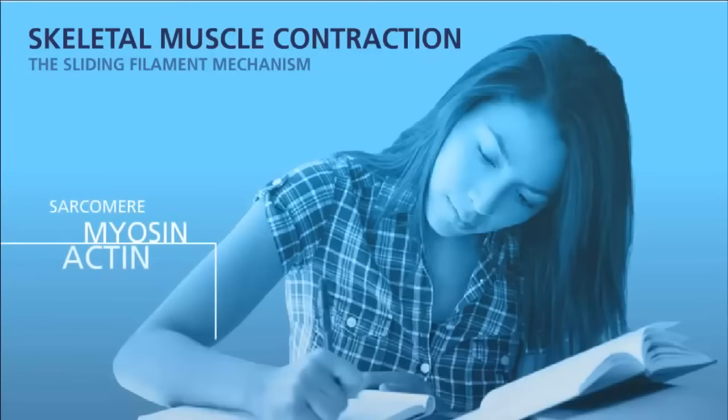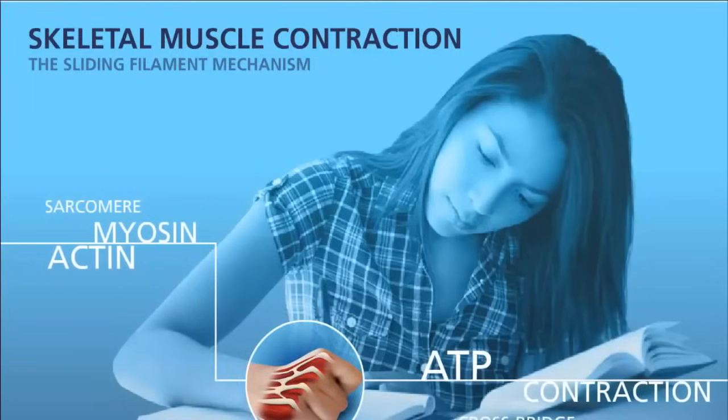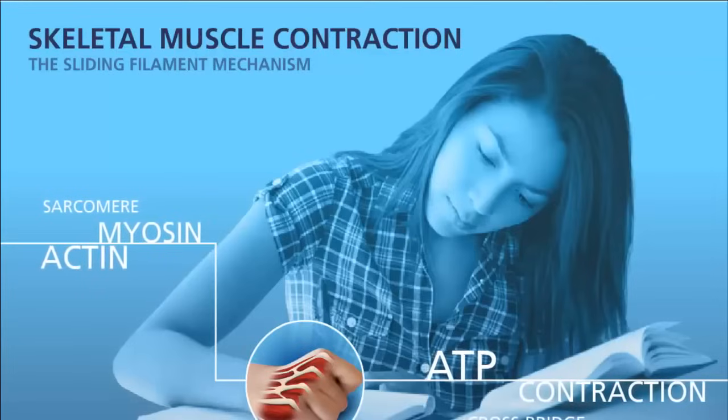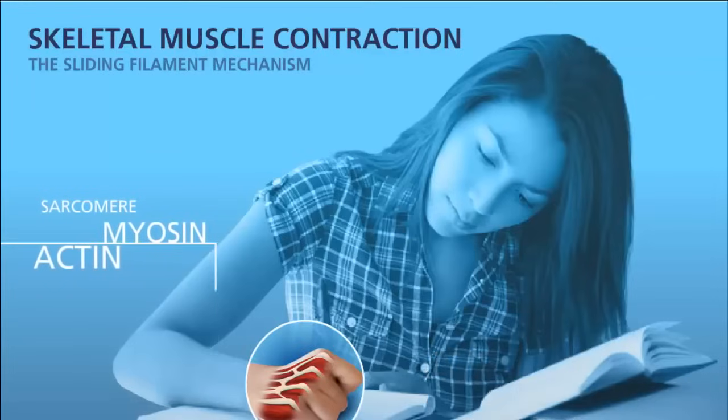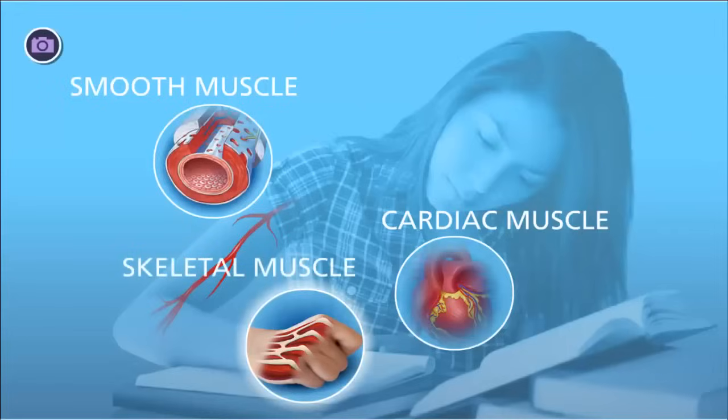You use muscles every day to do activities. This woman is using muscles to breathe, circulate blood, and move her hand to take notes. Your cardiac and smooth muscle tissues are involuntary. You do not consciously control their actions. Skeletal muscle works under voluntary control.